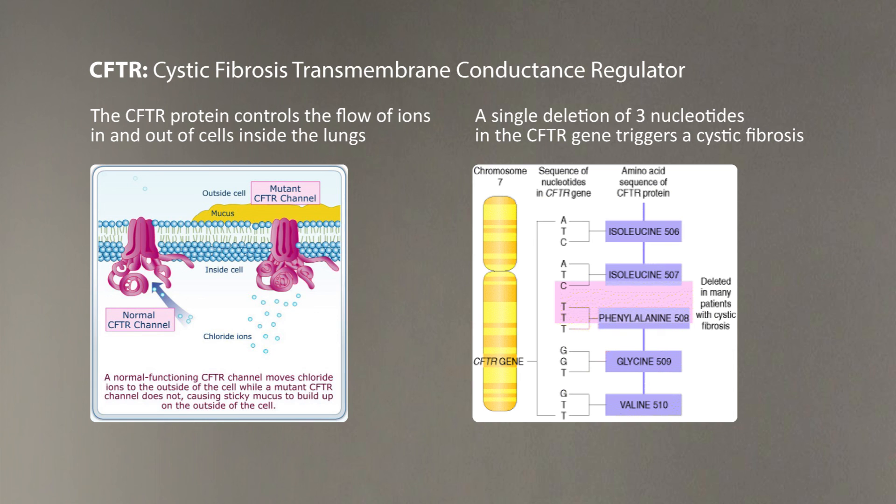In fact, it turns out that just a three nucleotide deletion in this gene disrupts ion channels and causes cystic fibrosis.